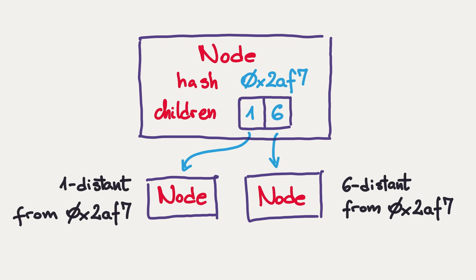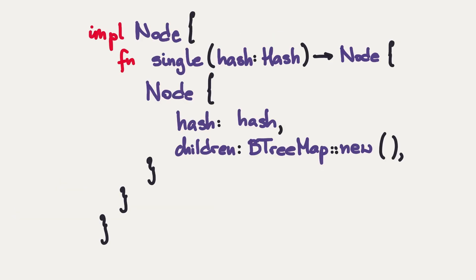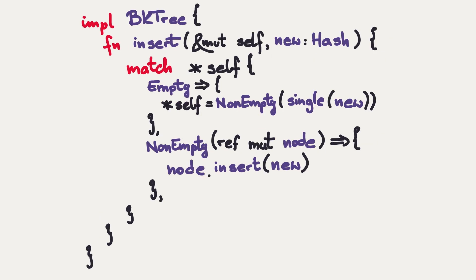With the description of the data structure in place, we can move on and try to insert something to such a data structure. Let's start with a function to create a singleton node. Given a hash, I return a node with that hash and no children. Now, given a BK tree, I want to insert something to it. So I take a mutable reference to BK tree. And everything depends on the shape of the tree. If it's empty, I just replace myself with a non-empty tree with a single hash. Otherwise, I call insert on the node in my non-empty tree.